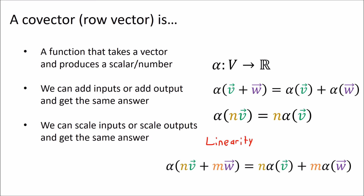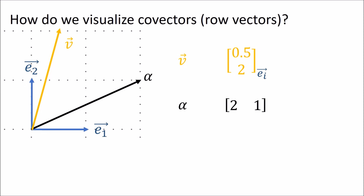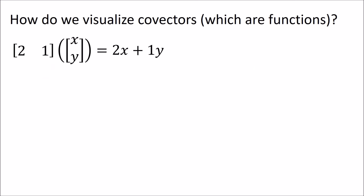So now, how do we visualize these co-vectors? We know that we can visualize ordinary vectors as arrows, but that's an awkward way to visualize a function. It turns out there's a much better way. Let's think of this 2D row vector as a function on two variables, x and y. The row vector 2, 1 can really be thought of as the function 2x plus 1y.